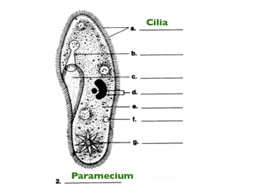The paramecium cannot engulf food like the amoeba. So it has an opening — the oral groove — which leads to the inside of the paramecium like a mouth. It's an indentation in that pellicle, also lined with cilia, which brings food particles in. At the bottom of the oral groove there's a little tube that leads into the paramecium called the gullet.